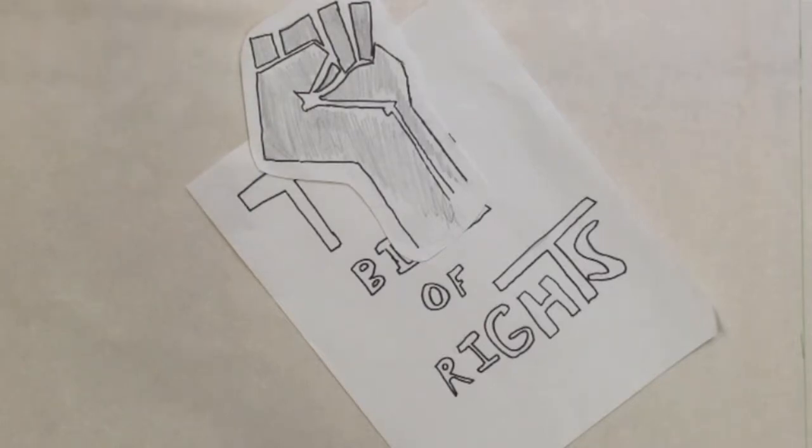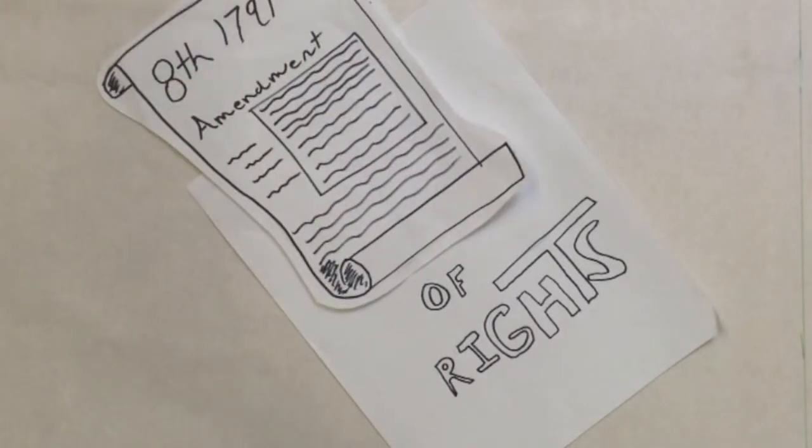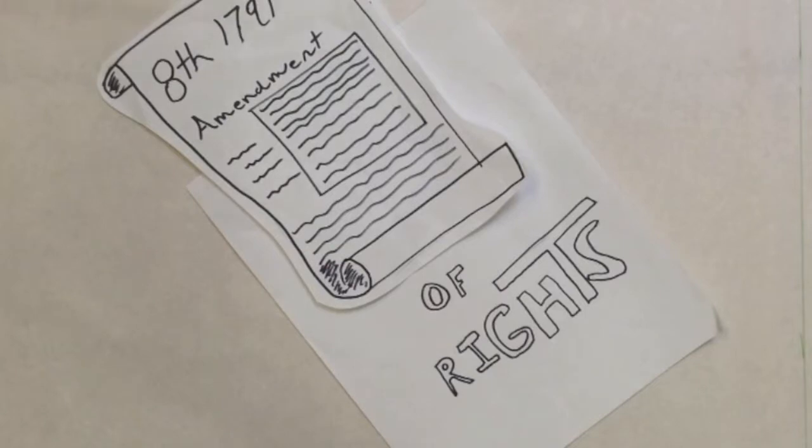The Eighth Amendment was introduced in Congress in 1791 by James Madison. It is considered one of the most straightforward amendments.